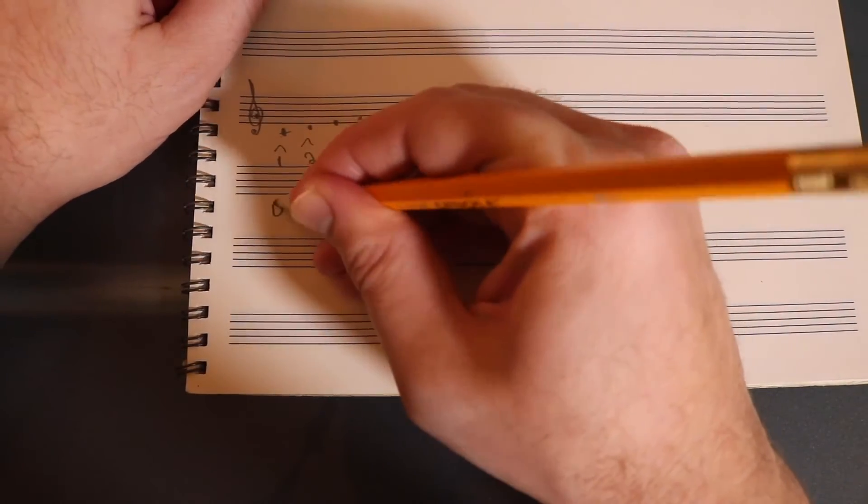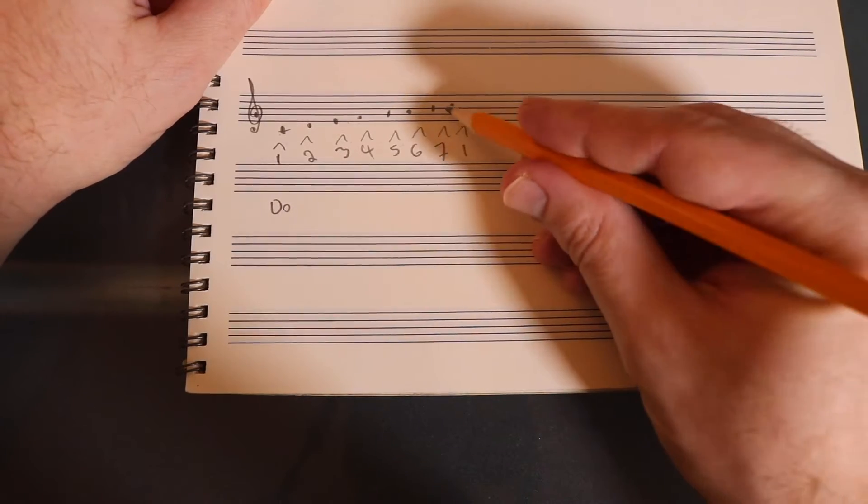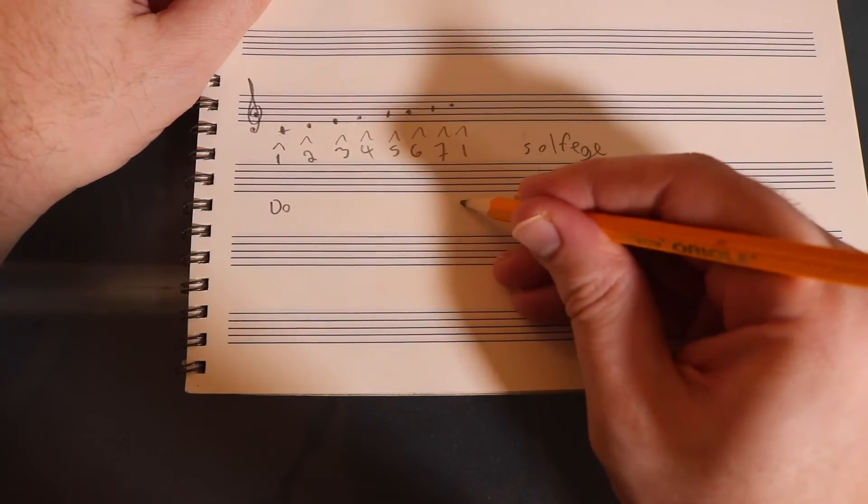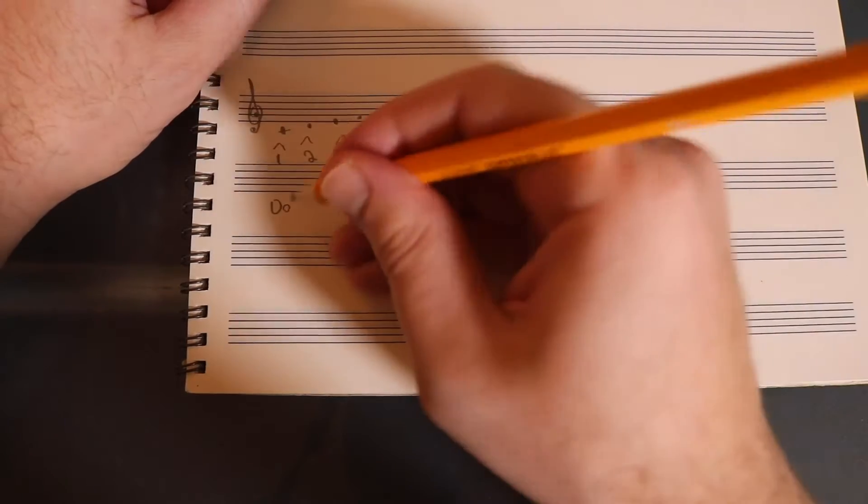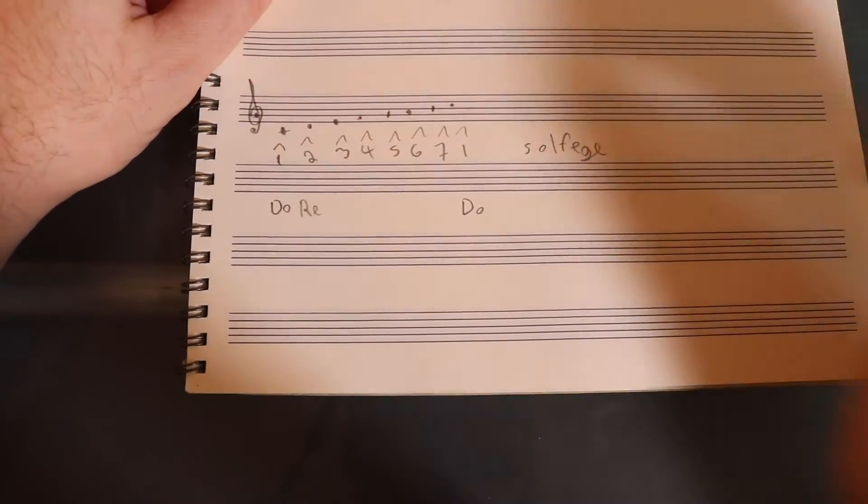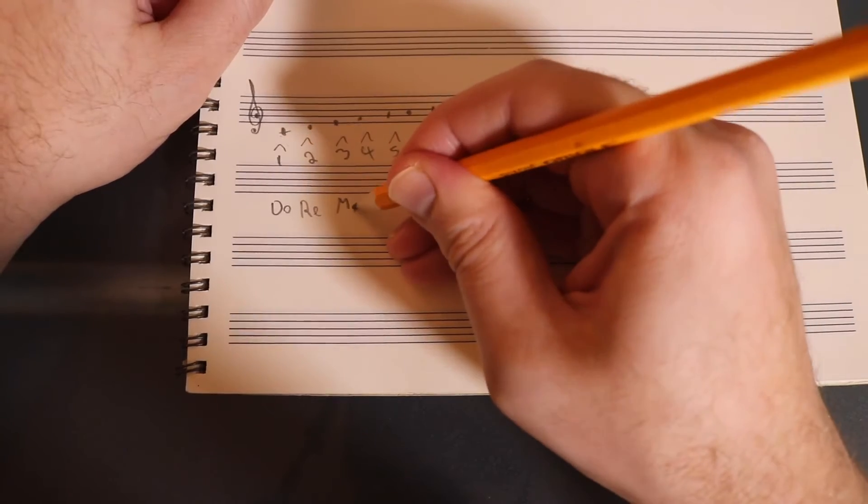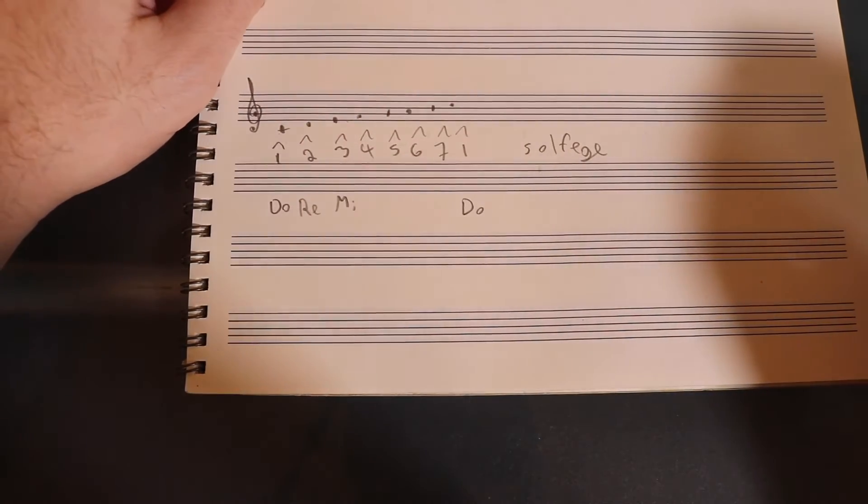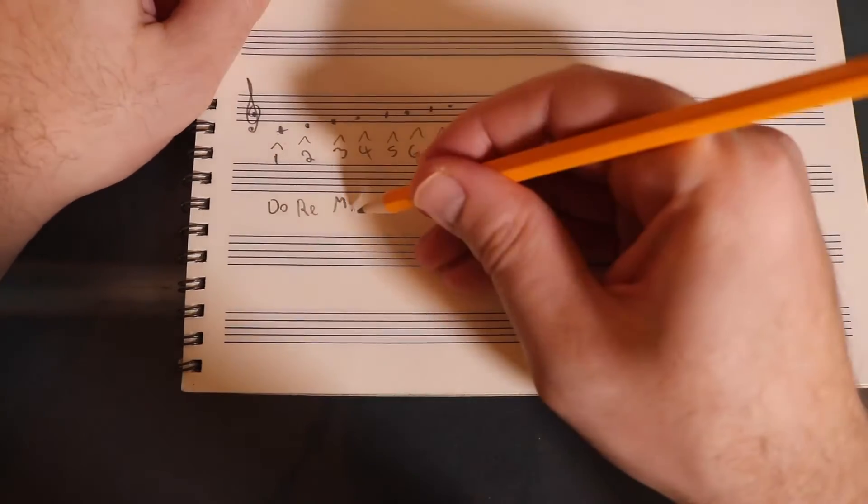Let's write it out just so we know. The first scale degree is called Do. And remember this is the first scale degree again so it ends with Do as well. Do, Re, Mi. These might not be spelled the way you imagined but Do, Re, Mi, Fa.